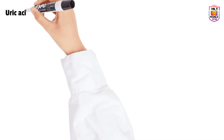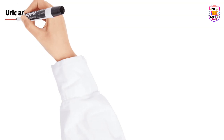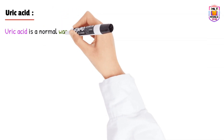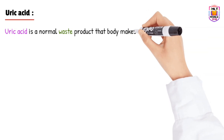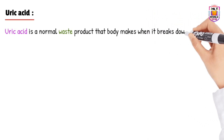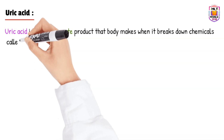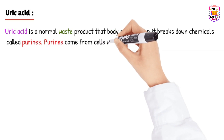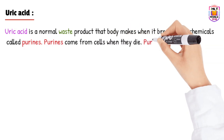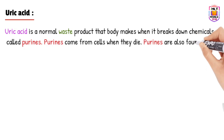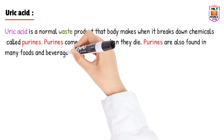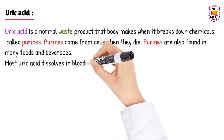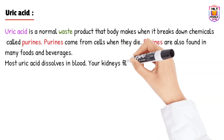Uric acid is a waste product that is formed in our body and excreted out from the kidney in the form of urine. Uric acid comes from purines. If anyone is taking high-protein food, purines are present in that food, and when the metabolism of purines happens, uric acid is released as a waste product and excreted out from the body.